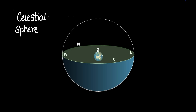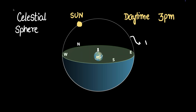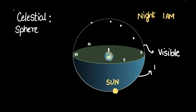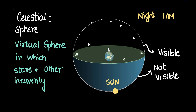So, the celestial sphere — what is it? This sphere I've drawn here is the celestial sphere. Let's say it's 3 pm in the afternoon, daytime, and the sun is somewhere here. When you look up at the sky, you see it all bright and you hardly see any stars. The sky above you looks like a hemisphere, and this upper hemisphere is visible to you, while the hemisphere below you is not. At 1 am at night, you can see stars, and the sun is hidden in the hemisphere below. The celestial sphere is defined as a virtual, imaginary sphere in which stars and other heavenly bodies move.